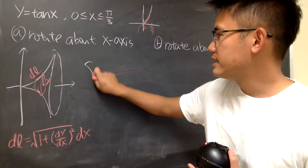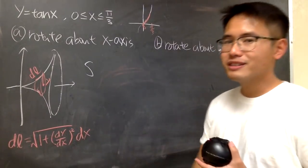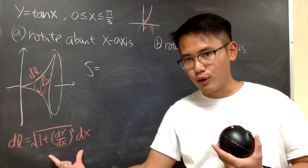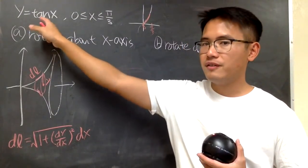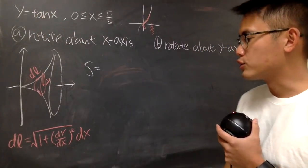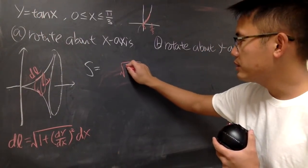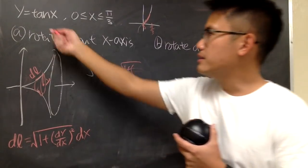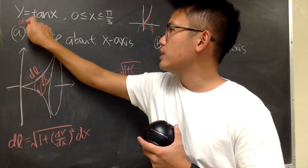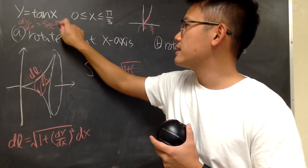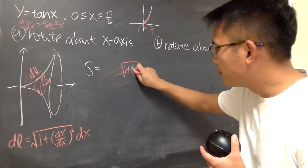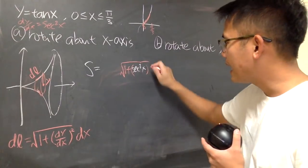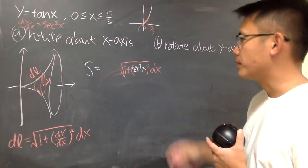So for surface area, I think the notation is s for many books, so I'll use s as well. I will recommend you guys to put this down first. Once again, it depends on the given function. Here, we have y is equal to a function of x, so you write that down, which is square root of 1 plus dy dx. And we can figure this out. dy dx is just secant square x. So I will put down secant square x right here, and we will have to square that, and I will have to put down the dx on the very outside.